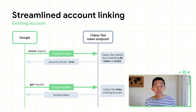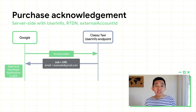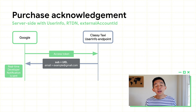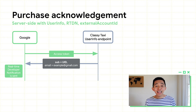After Streamline Account Linking is completed, Google will call the user info endpoint. Frictionless Subscriptions utilizes a new server-initiated approach to acknowledging purchases, utilizing the user info endpoint. After Streamline Account Linking completes, Google calls the user info endpoint for the recently linked account. Classy Taxi returns two fields, sub and email, for the account.